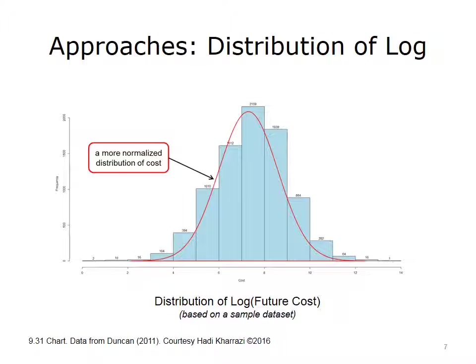As discussed earlier in this unit, data transformation is sometimes a critical step to prepare the data for analysis and modeling. Due to the skewness of cost data, as shown in the last slide, the cost data is being transformed by a log function. When cost data is log transformed, the cost data becomes more normally distributed, thus making it more suitable for methods such as linear regression that require such distribution in the underlying data.